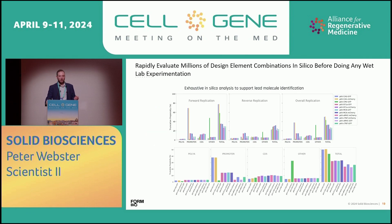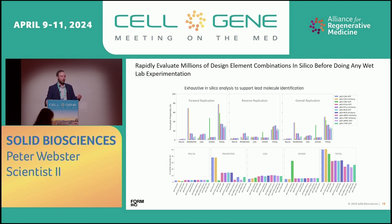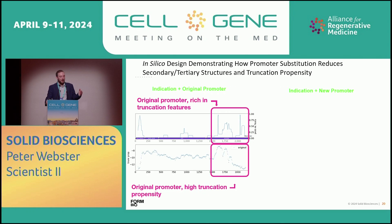What's really powerful about this AI tool is that we're able to compare multiple vectors, multiple promoters, and gene sequences all together very quickly and make decisions. We get a readout like this and are able to see that certain promoters are likely to have more propensity for truncation, leading us to potentially rule those out as we move forward. We can take this data and design a robust and manufacturable gene construct that's likely to work as we're moving forward in our drug development.